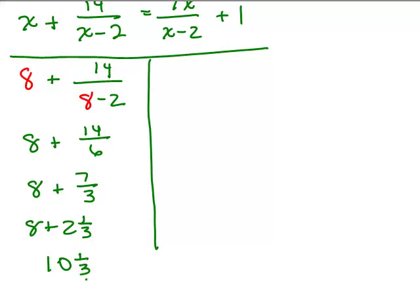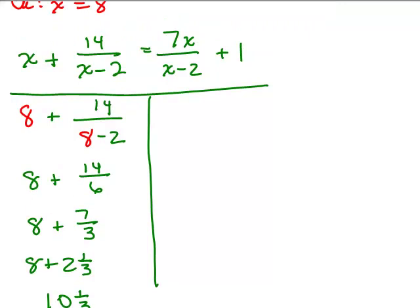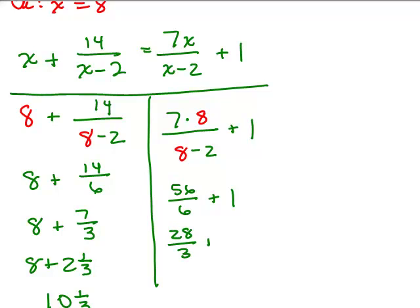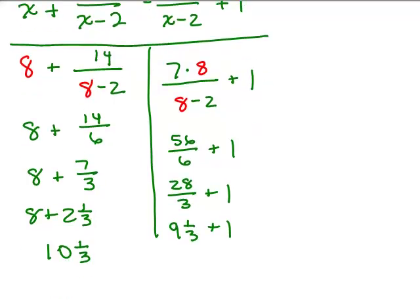Let's see what happens on the right side. I have 7(8)/(8-2) plus 1, which is 56/6 plus 1. I can reduce 56/6 to 28/3, and 28 divided by 3 is 9 and 1/3 plus 1, which is 10 and 1/3. It checks, so 8 is the correct solution.